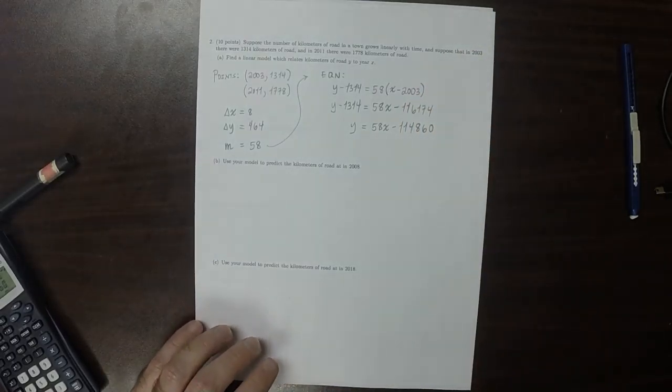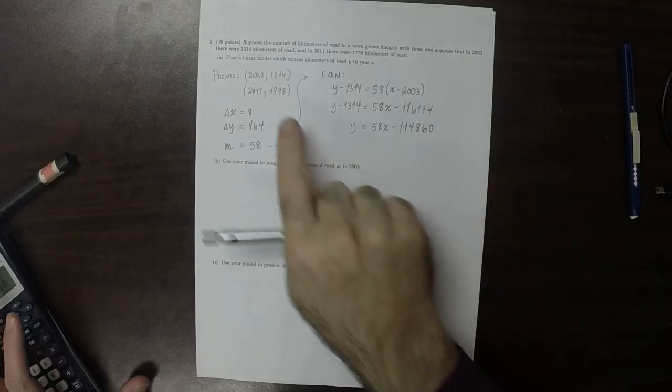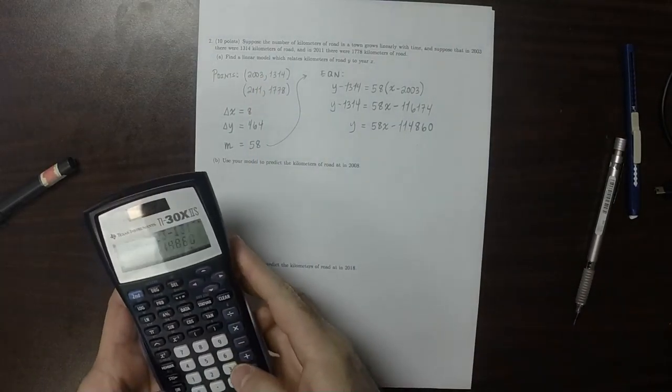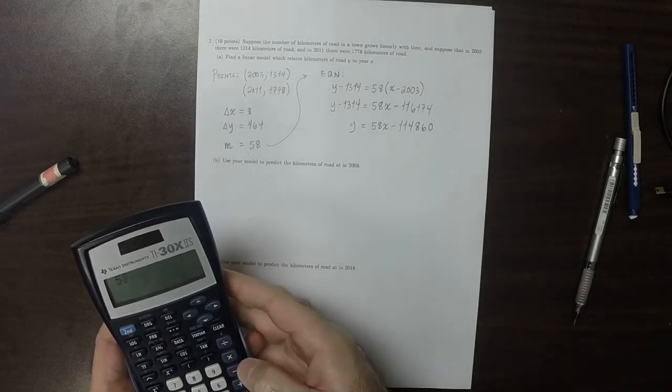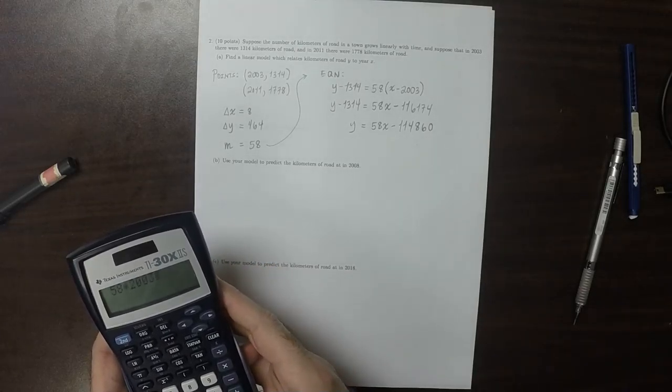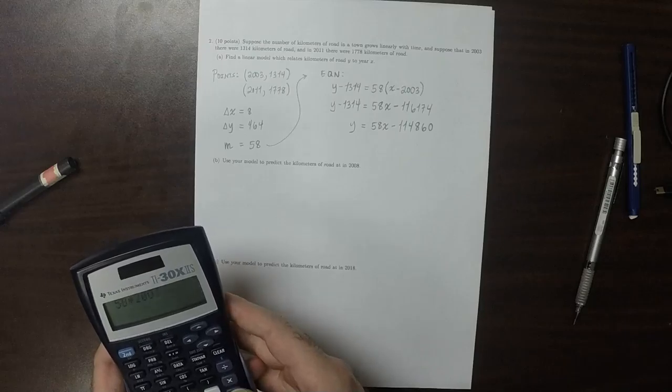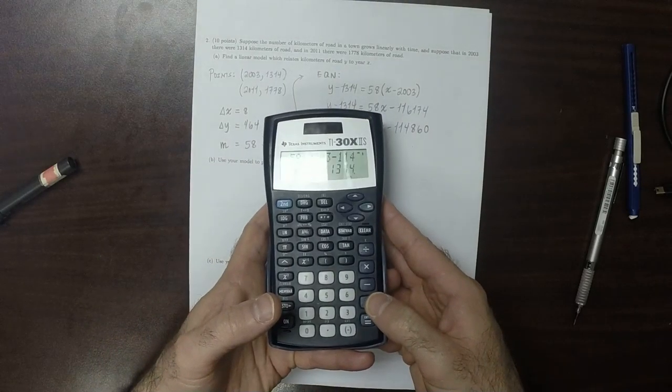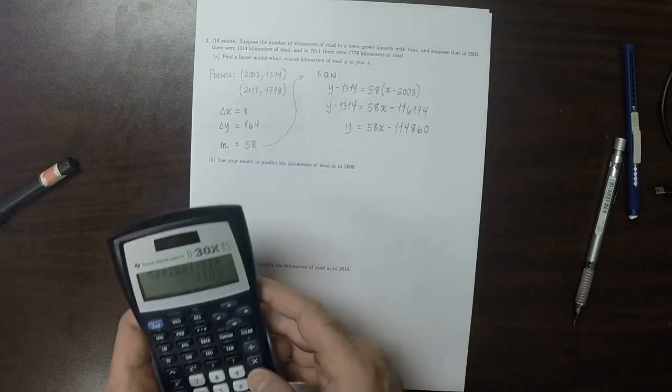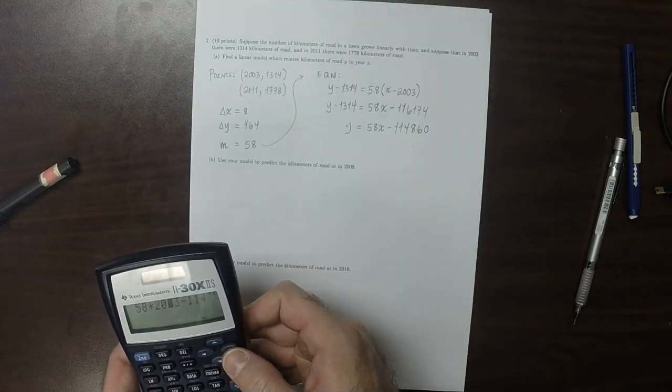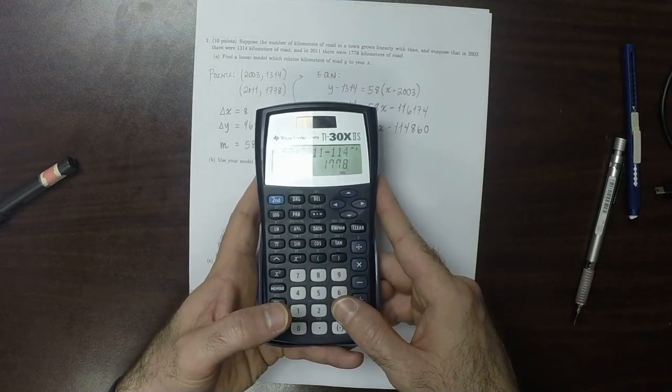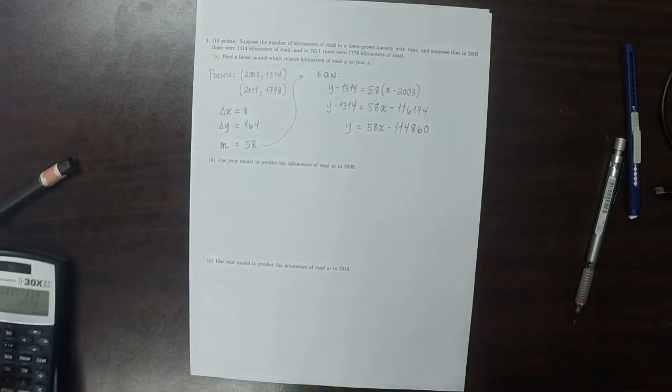And those look like kind of crazy numbers, so we can check and make sure that's right by plugging those in. So 58 times 2,003 minus 114,860, I get 1,314. And 58 multiplied by 2011 minus that same number, I get 1,778. So that's the right model.